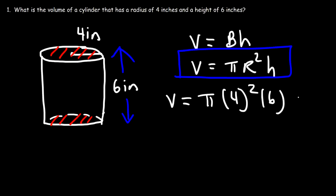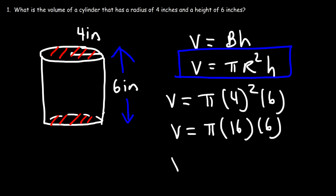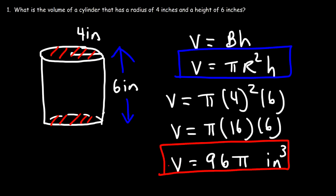4 squared is 4 times 4, which is 16. 16 times 6: 10 times 6 is 60, 6 times 6 is 36, and 60 plus 36 is 96. So 16 times 6 is 96, and our answer is 96 pi cubic inches. For the decimal value, I'll use the pi value from my calculator, which is 3.14159.